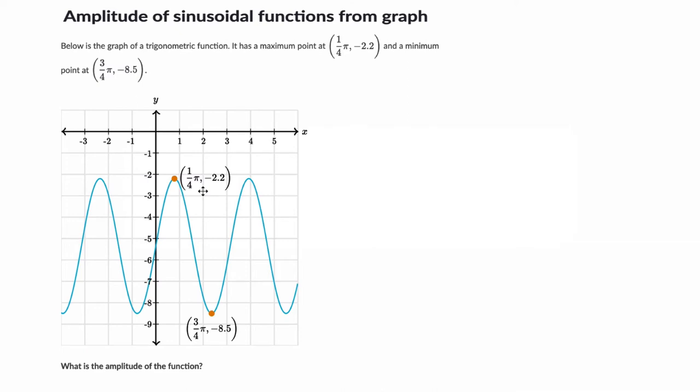In each of these problems they want to know what is the amplitude, and to understand that you have to find the midline. The midline, the midpoint between the maximum and minimum points in a trig function, and the amplitude is the distance from that midline to the max or min. So let's find the middle first and then go from there.